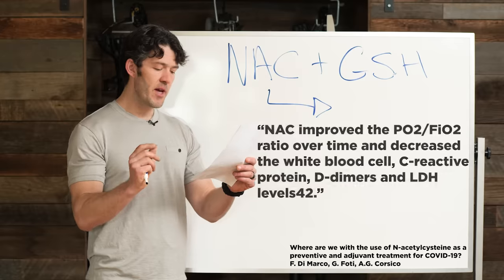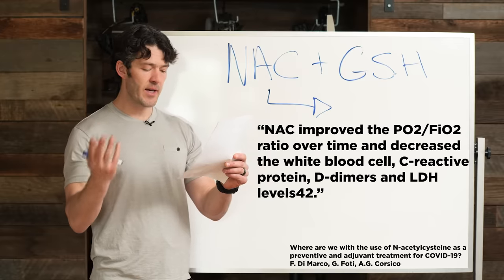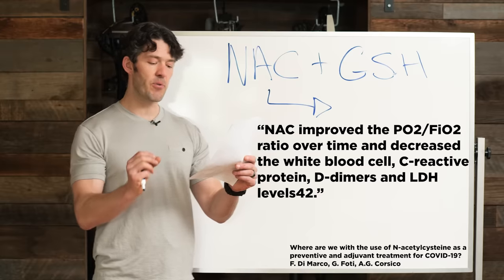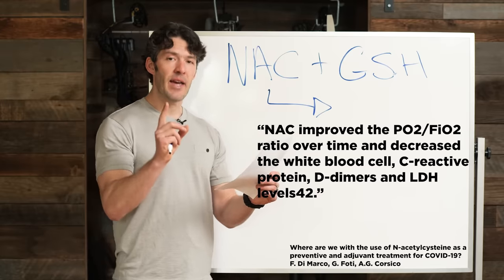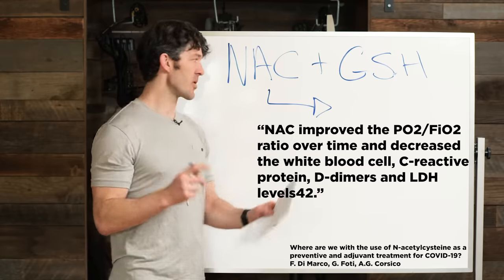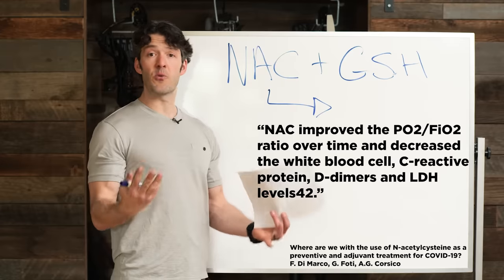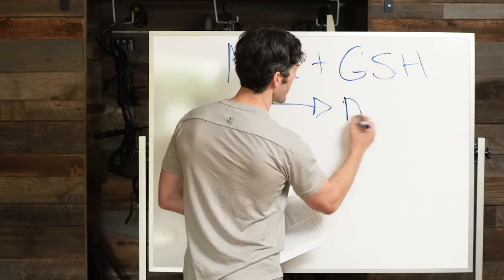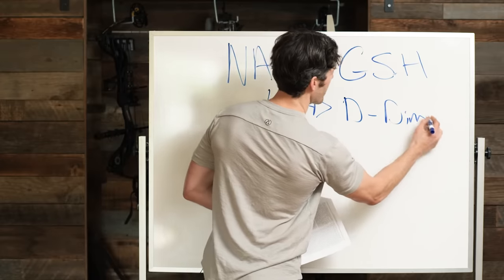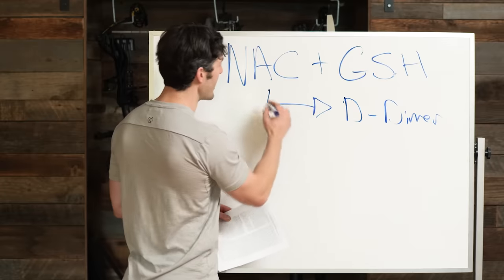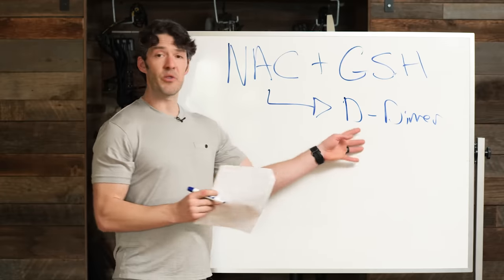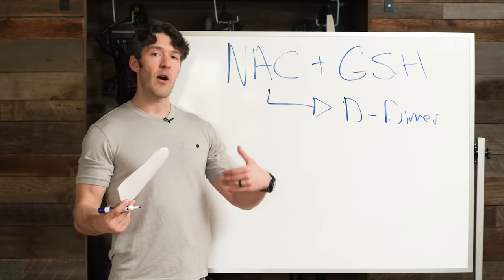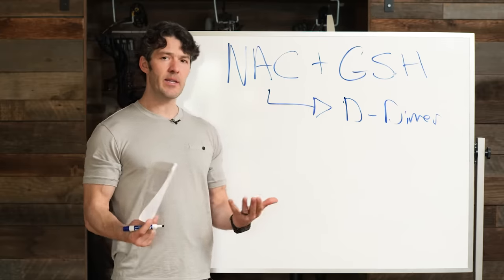NAC improved the blood oxygen to catalyze oxygen ratio over time and decreased white blood cell, C-reactive protein, D-dimer, and lactate dehydrogenase levels. One way to approximate clotting mechanisms in the body is a blood test called D-dimer. NAC has been shown to reduce D-dimer levels in people that have an active infection.